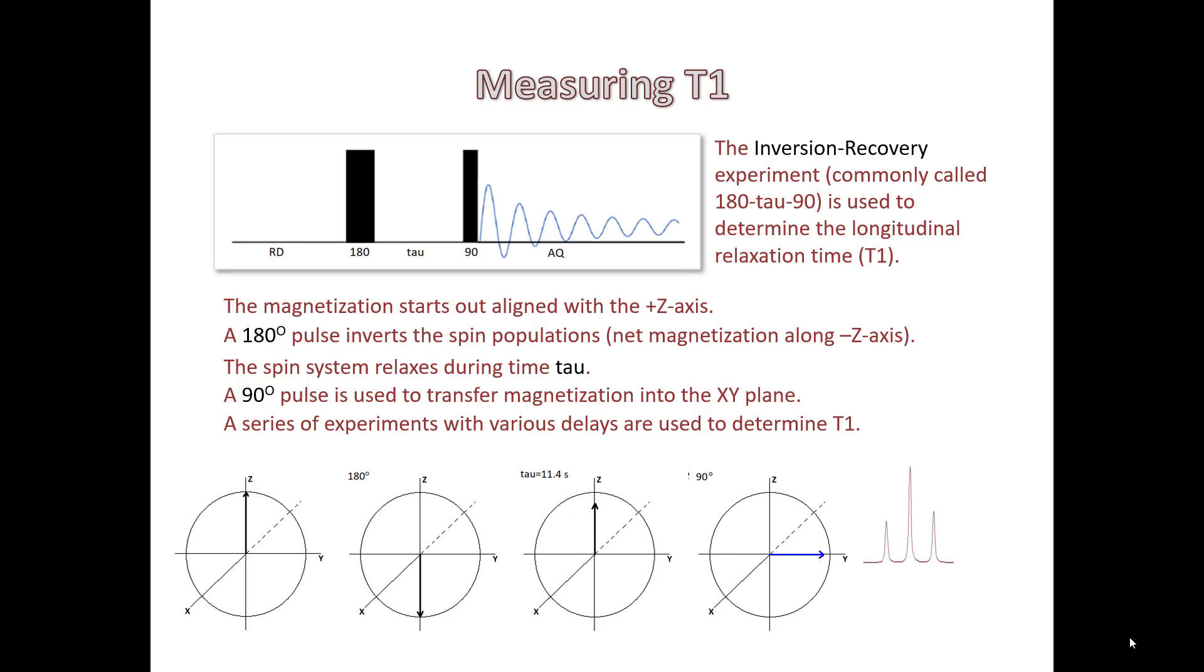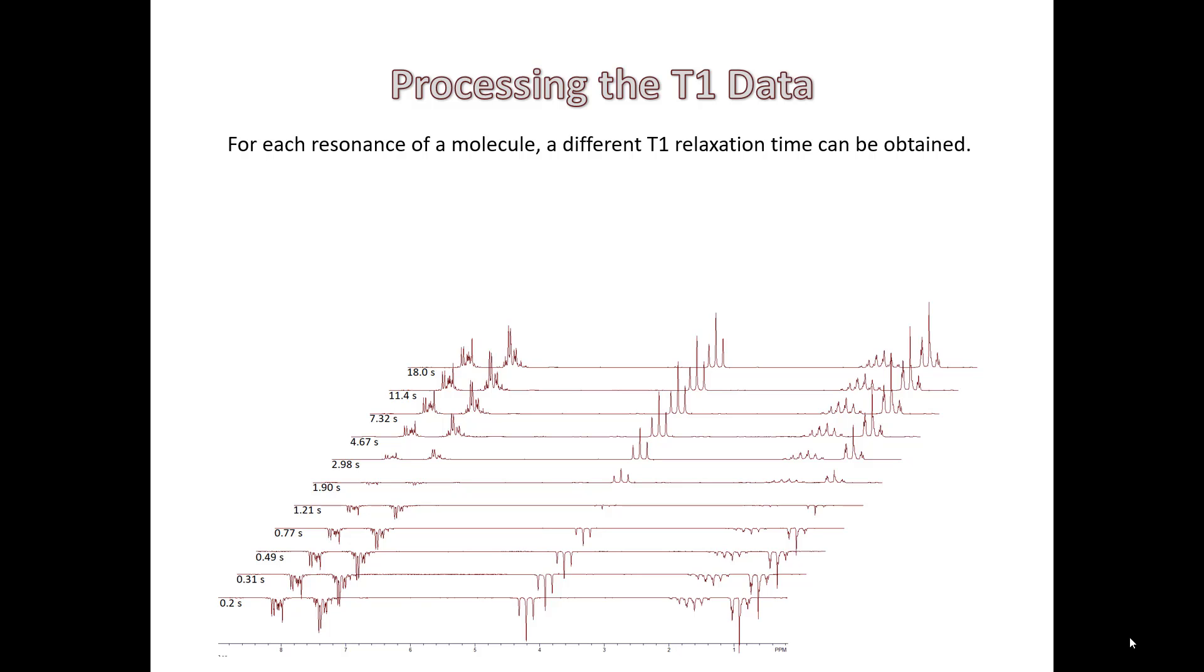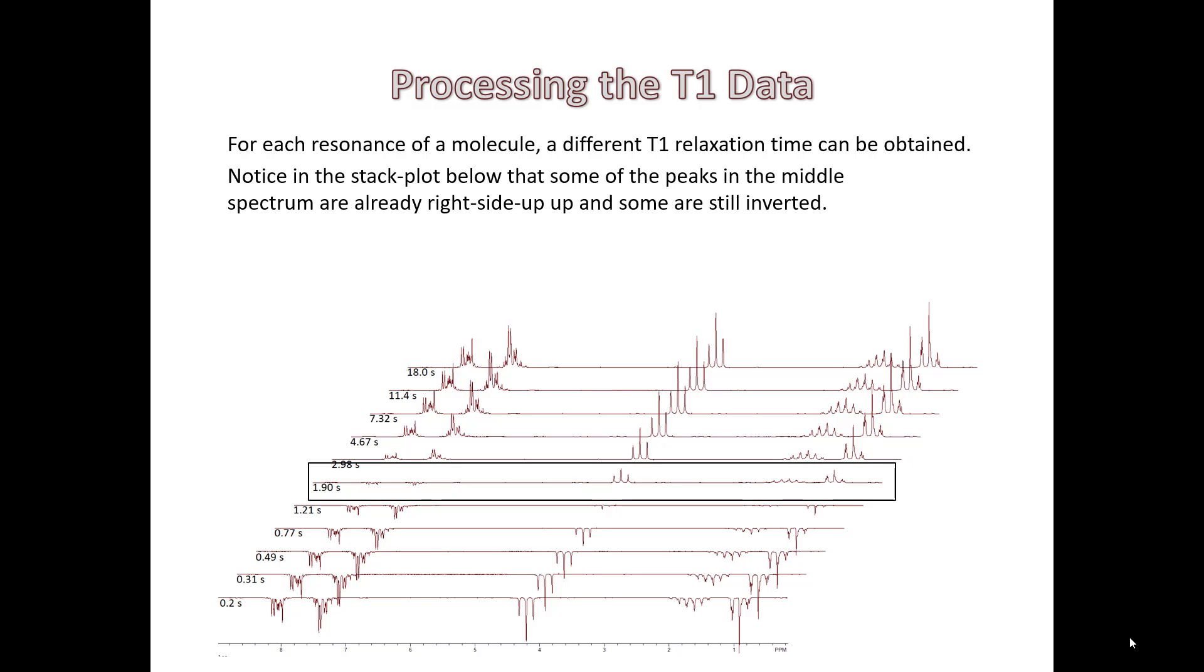So what are the results of this experiment? When we go to process the T1 data for each resonance of a molecule, we can calculate a different T1 relaxation time. But even just looking at this array, there's a little bit of information that we can garner. Notice the middle spectrum. Some of the peaks in the middle spectrum are already right side up and some are still inverted.